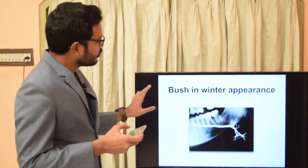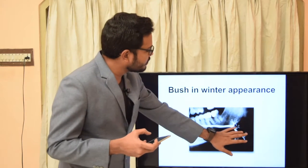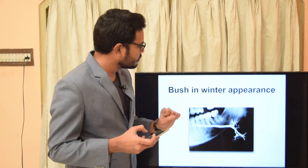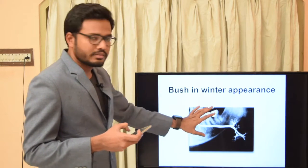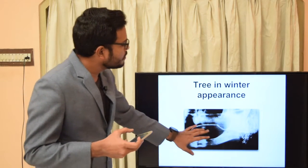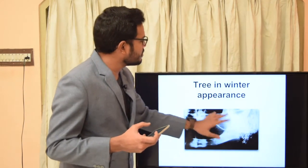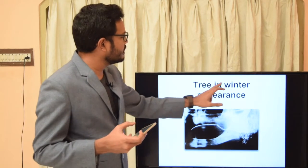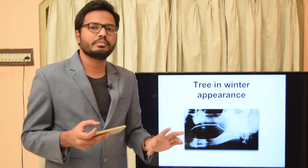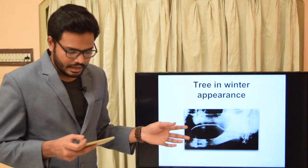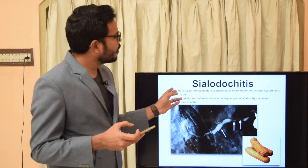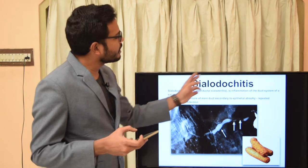The normal submandibular sialographic image has a bush in winter appearance, which is also very important to remember. The normal parotid gland sialogram has a tree in winter appearance. So bush in winter and tree in winter appearances are the normal sialographic images for these respective glands.